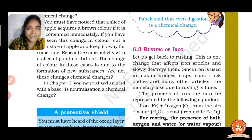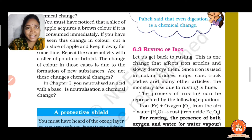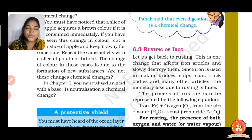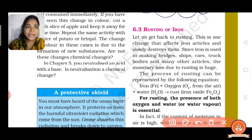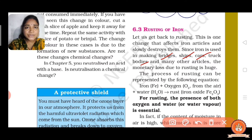Now the next point: rusting of iron. The brown layer that forms on any iron article is called rust, and the process is called rusting. This change slowly destroys iron articles. Since iron is used in making bridges, ships, cars, truck bodies, and many other articles, the monetary loss due to rusting is huge.